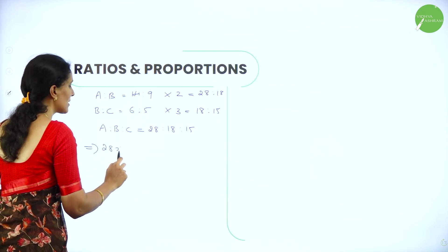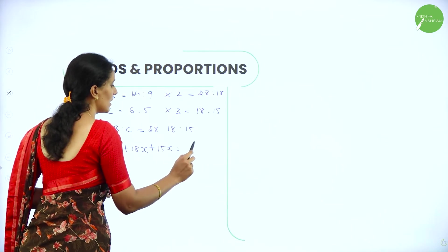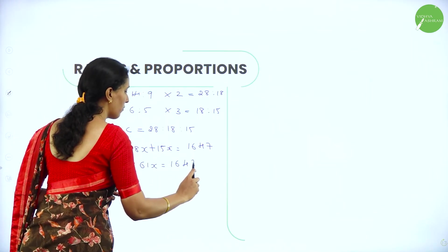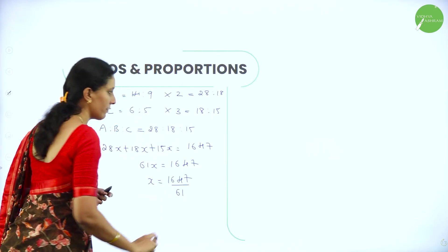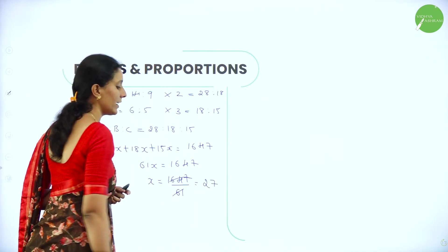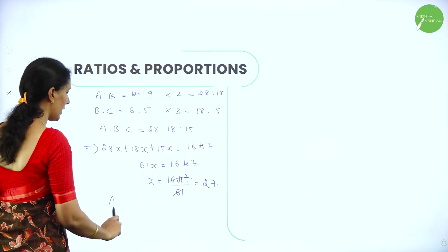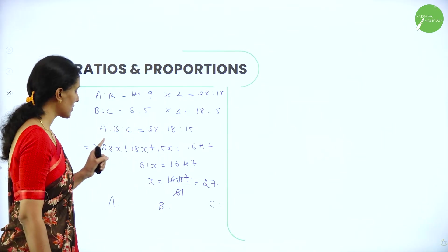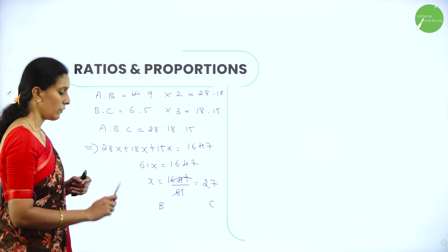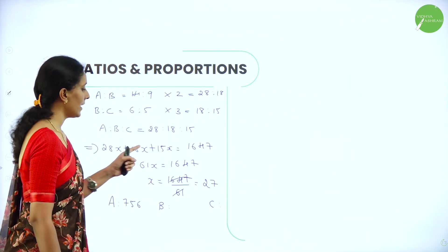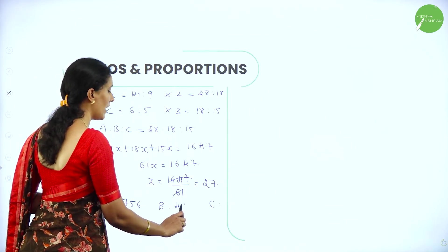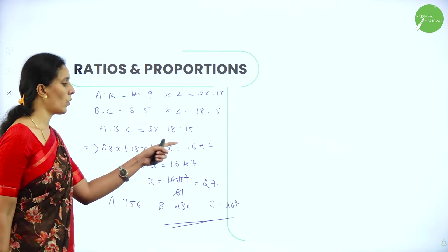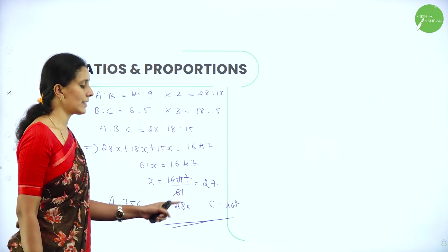So 28x plus 18x plus 15x equals 1647. Adding gives 61x equals 1647, so x equals 1647 divided by 61, giving x equals 27 rupees. Therefore A equals 28 into 27 equals 756; B equals 18 into 27 equals 486; and C equals 15 into 27 equals 405. Hence we have divided 1647 into 756, 486, and 405.